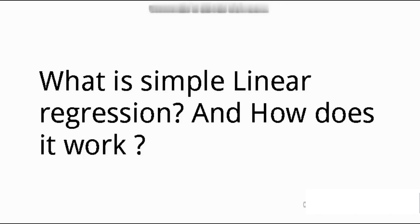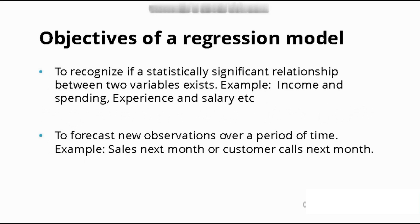Today we're going to talk about simple linear regression — what it is and how it works, starting from all the basics until finding the best fit line. Why do we need regression models? There are two main objectives regression models fulfill. The first is to recognize if there exists a statistically significant relationship between two variables — simply, does variable X have an effect on Y? For example, does income affect spending?